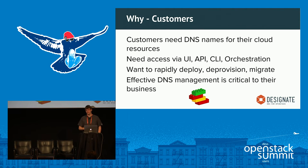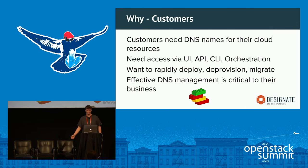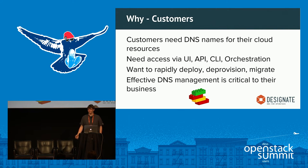Customers want to use a UI, a REST API, CLIs, and orchestration — all things Designate has. They want to spin up and spin down rapidly. And DNS is really important for their business: you don't want to mess up where your DNS points and have things go down. Being able to have labs.company.com for all your testing and separating that clearly from production is really important.